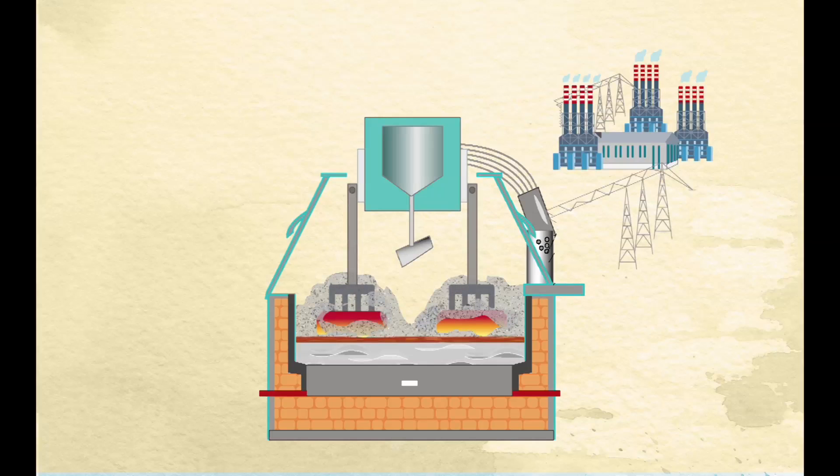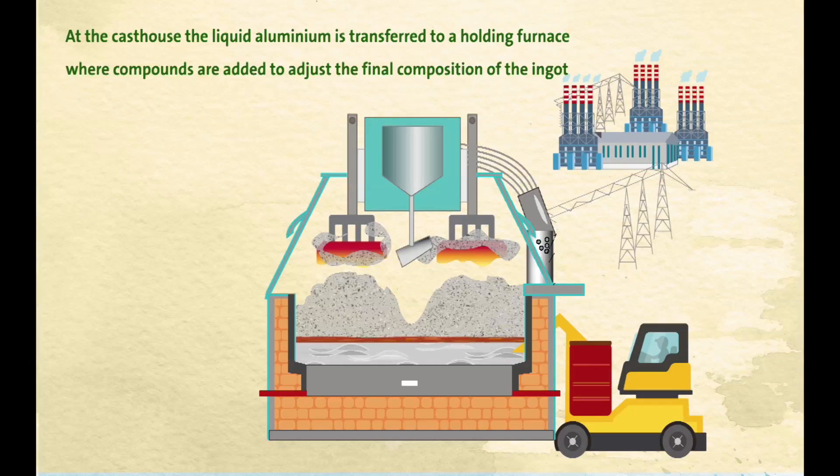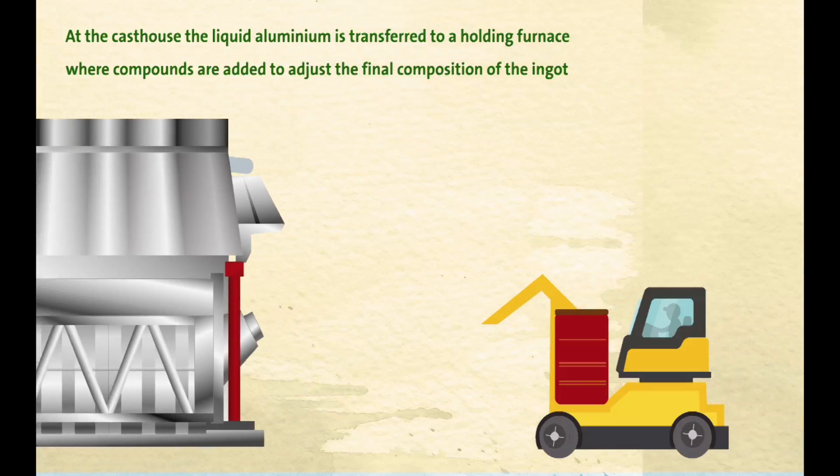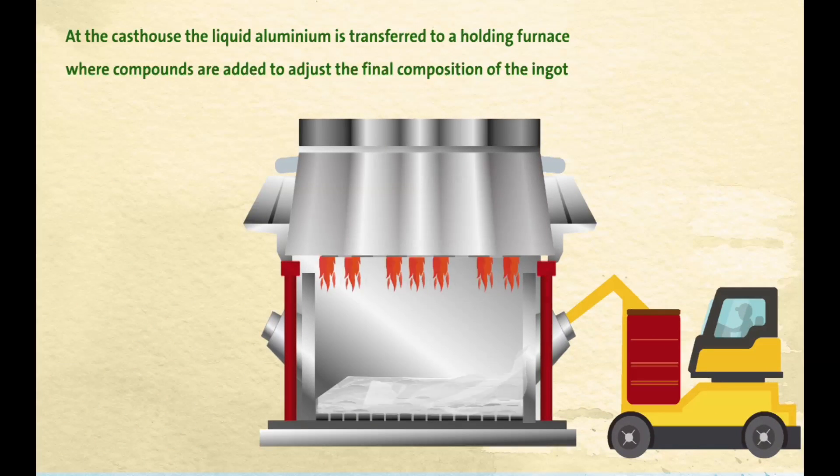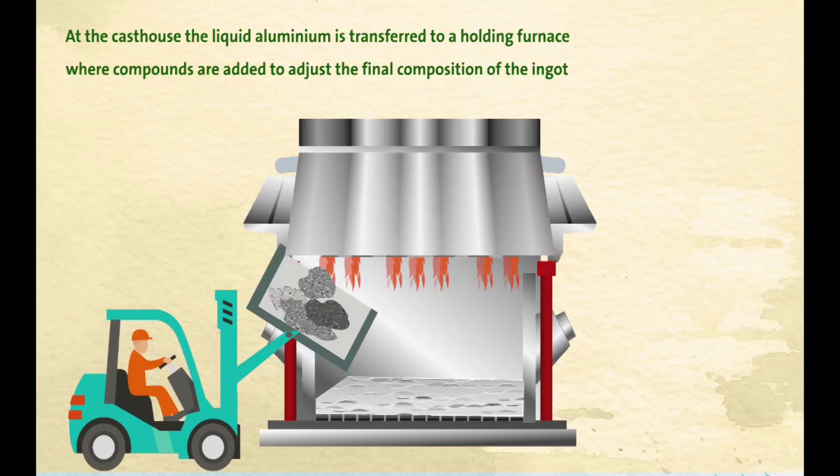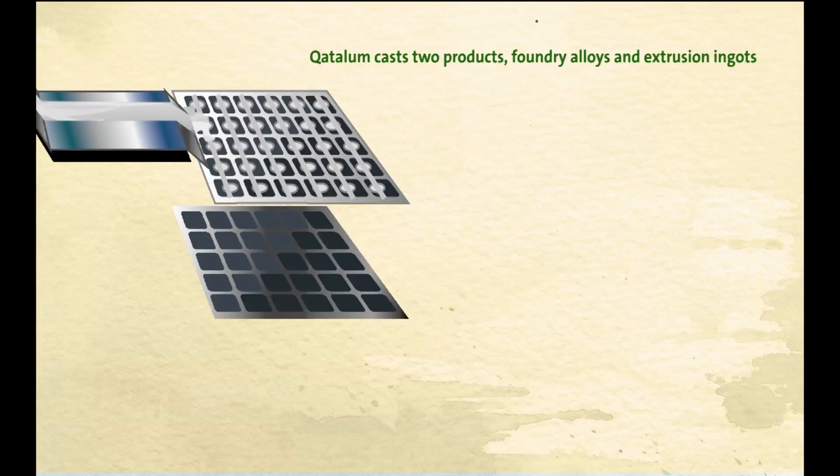Liquid aluminium is tapped from the bottom of each pot and driven to the cast house. At the cast house, it is transferred to a holding furnace. Within the furnace, compounds are added to adjust the final composition of the ingot, as determined by the end-user's specification. From the furnace, the liquid metal is cast by being poured into moulds as ingots.